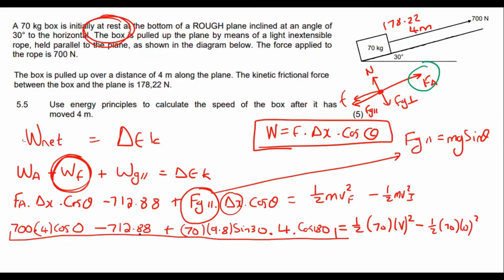OK, and that gives us 715.12 equals to now on the right hand side. This is a half of 70, half of 70. So that's going to be 35 V squared. And then I'm just going to quickly calculate V squared. I'm just going to divide by 35, take the square root, and we should get an initial velocity. Wait, wait, wait, wait. Oh, no, no, that is correct. Sorry. Final velocity. My bad. Final velocity of 4.52 meters per second.